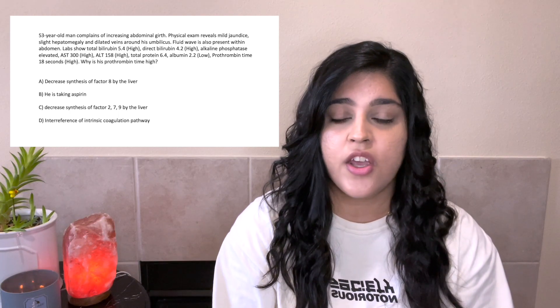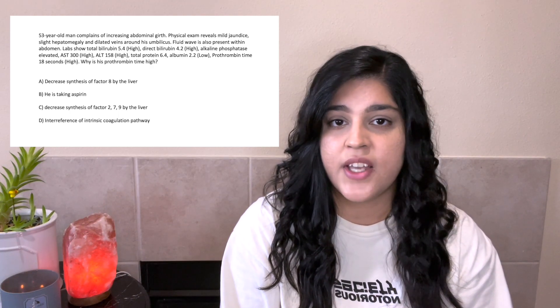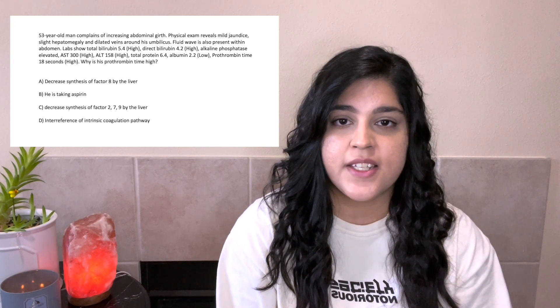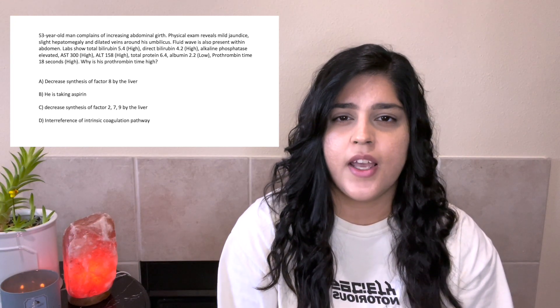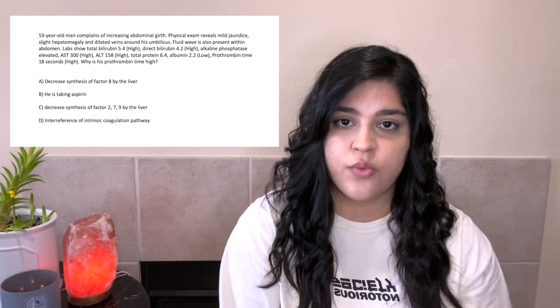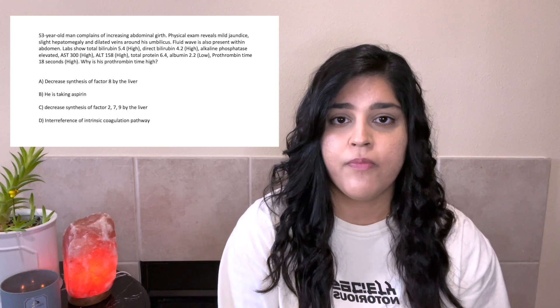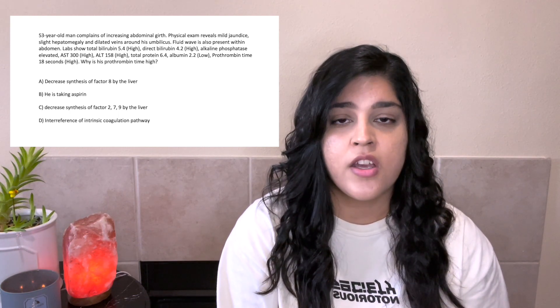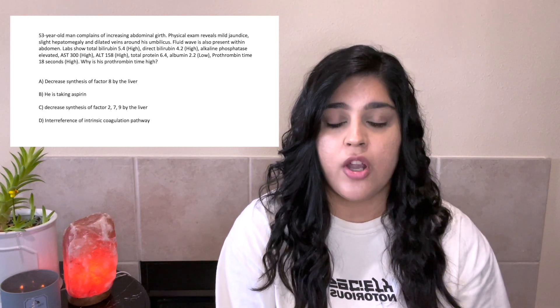I would also make Anki cards on the difference between PT and PTT and which clotting factors affect each. For PT, clotting factors 2, 7, 9, and 10 are most important; for PTT, factor 8 is most important. I'd also specify which pathway belongs to which: the intrinsic pathway belongs to PTT, and the extrinsic pathway belongs to PT. These details have come up multiple times on exams — in medical school, on NBMEs, and on Step — so they're very important.